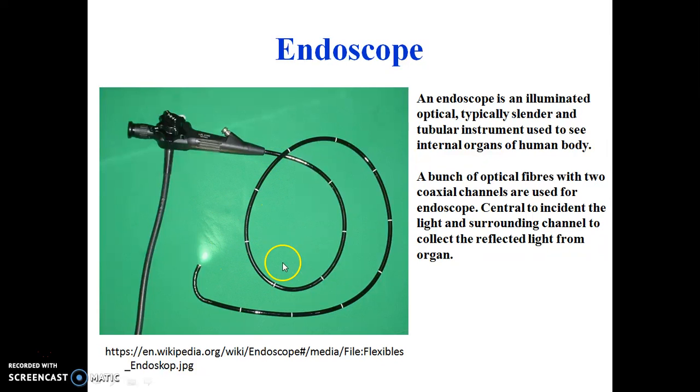A bunch of optical fibers with two coaxial channels are used for the endoscope. The central channel is used to incident the light and the surrounding channel is to collect the reflected light from the internal organ. There is a source of light and a detector to detect the reflected light, and from the amplitude distribution images form.